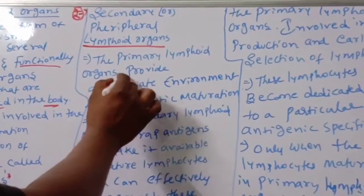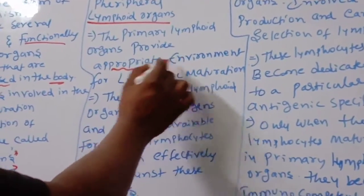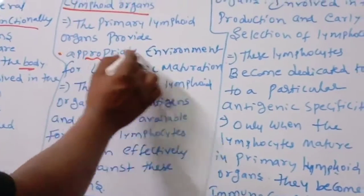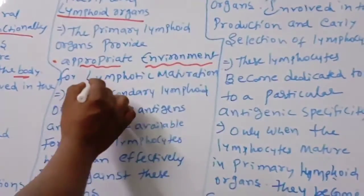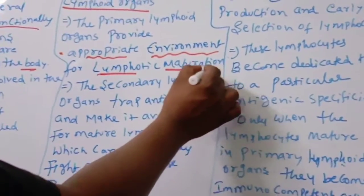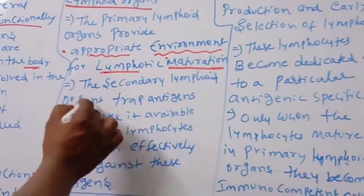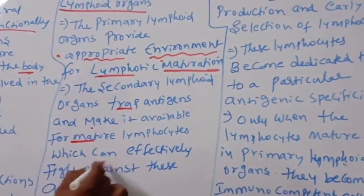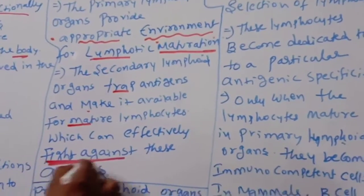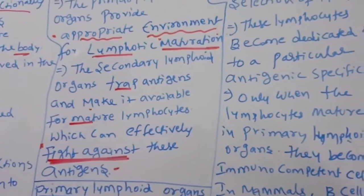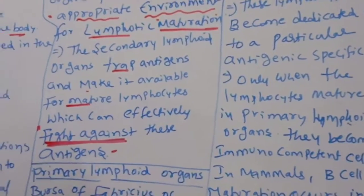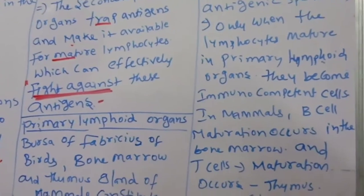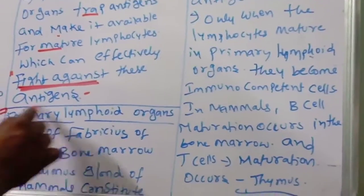The primary lymphoid organs provide appropriate environment for lymphocyte maturation. The secondary lymphoid organs trap antigens and make them available for mature lymphocytes which can effectively fight against the antigens. So maturation takes place in the primary lymphoid organs, and fighting takes place in the secondary lymphoid organs.